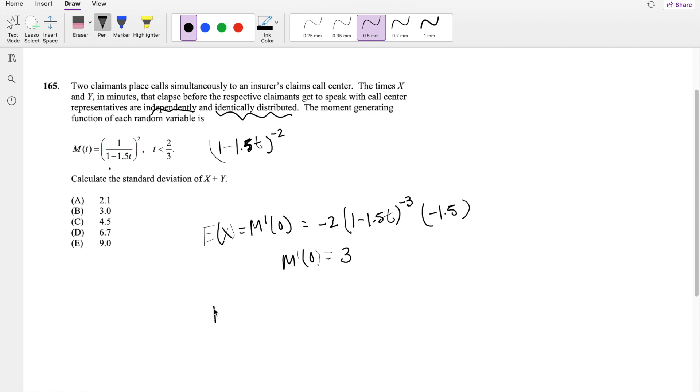How about our second moment? The cool thing about moment generating function is the second moment is just the second derivative evaluated at zero. So taking the second derivative here, it's going to be equal to 2 times negative 3, 1 minus 1.5t raised to the negative 4th, times negative 1.5 times positive 1.5 from the previous one here.